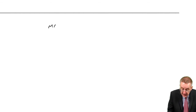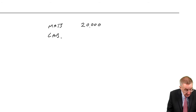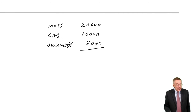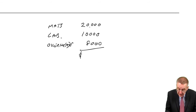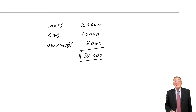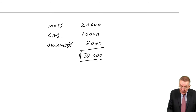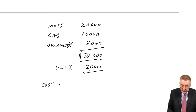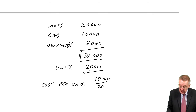All we do is add up the costs in the process: materials 20,000, labour 10,000, overheads 8,000 — total costs this month: 38,000. We then ask how many units did we produce this month: 2,000. So the cost per unit is 38,000 divided by 2,000, which is $19 per unit.